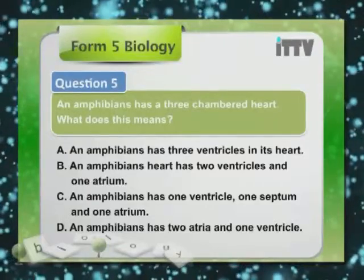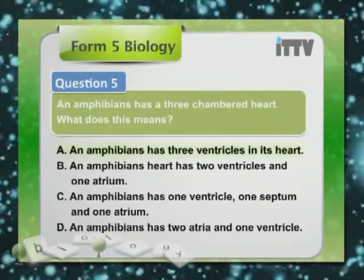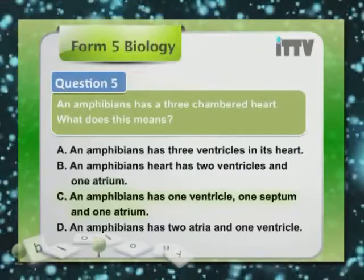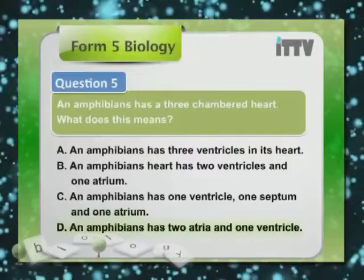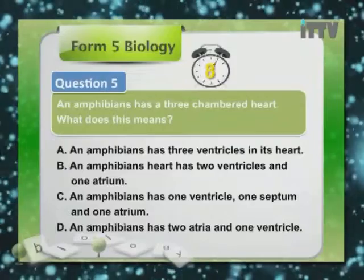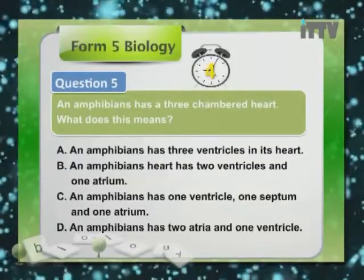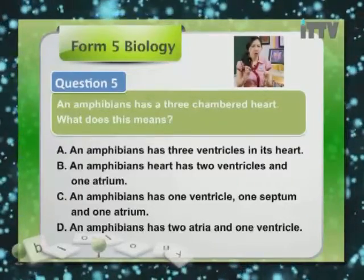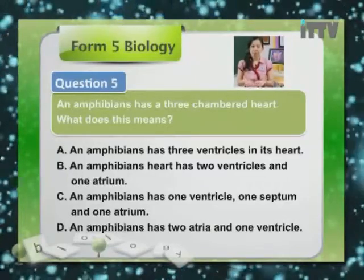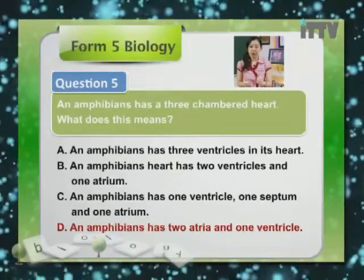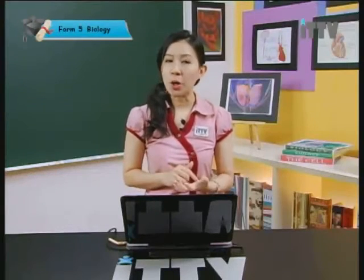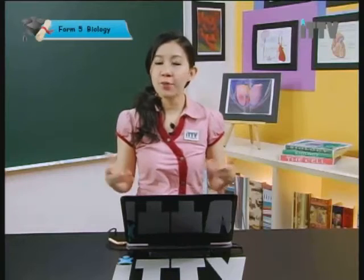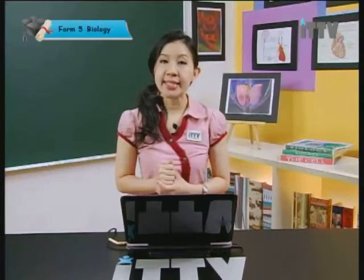Question 5: Amphibians have three-chambered hearts — what does this mean? A. Amphibians have three chambers in the heart. B. Amphibians have two ventricles and one atrium. C. Amphibians have one ventricle, one septum and one atrium. D. Amphibians have two atria and one ventricle. The answer is D — two atria and one ventricle. B is wrong as amphibians do not have two ventricles and one atrium, and C is wrong because amphibians have no septum to divide the ventricles.